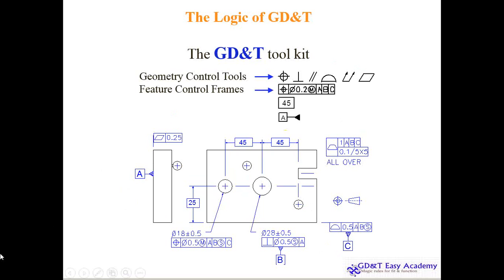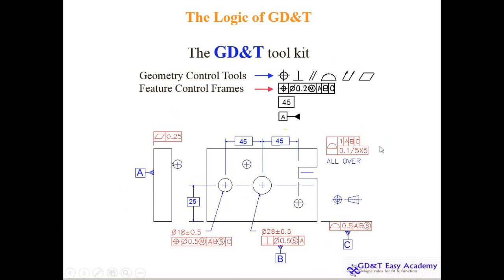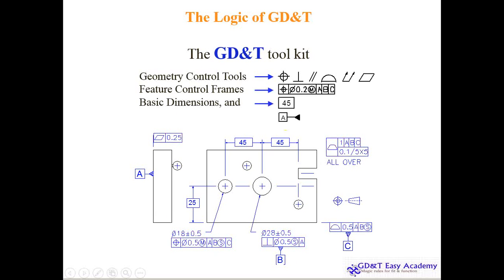The feature control frame is where you arrange all the geometric dimension and tolerancing symbols. All the red highlighted areas are feature control frames. The basic dimensions are also highlighted — for example, 25 as a typical location from the coordinate zero-zero, 45 as a typical position. All these typical dimensions never have GD&T applied because they are basic and critical dimensions.